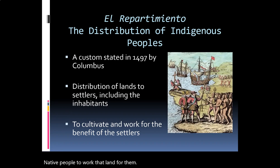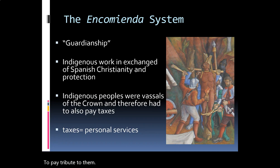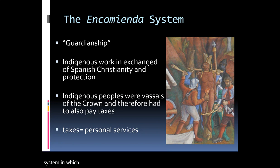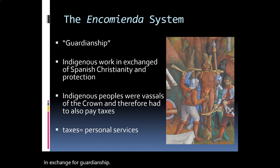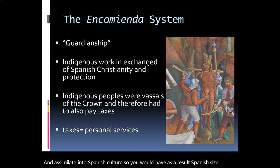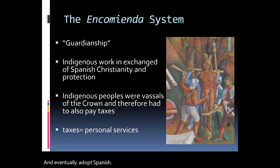Native people would pay tribute to the Spanish soldiers because these people were representing the Spanish crown. This leads to something called the encomienda system — a system in which native people were put in the hands of Spanish soldiers, conquistadores, or noble class people in exchange for guardianship and to help native people convert and assimilate into Spanish culture. As a result, you would have Hispanicized natives who would adopt Spanish Catholicism and eventually live by the rules of the Spanish colonial system.